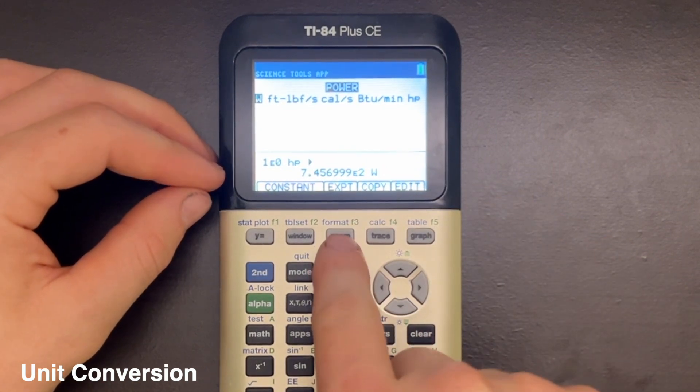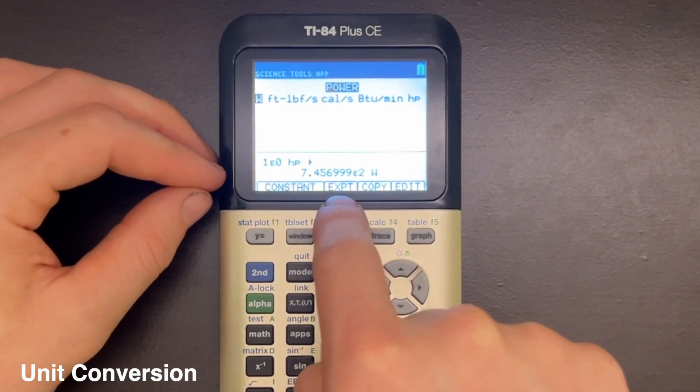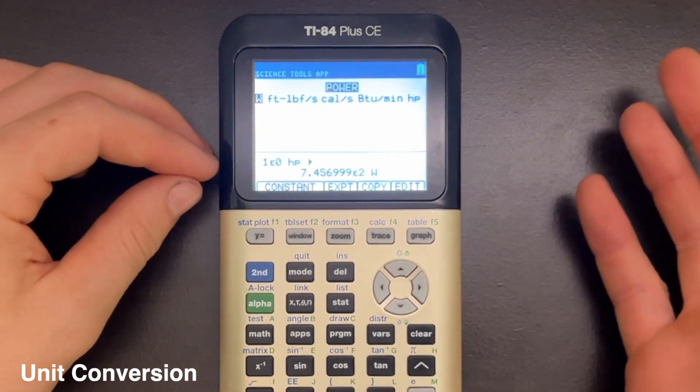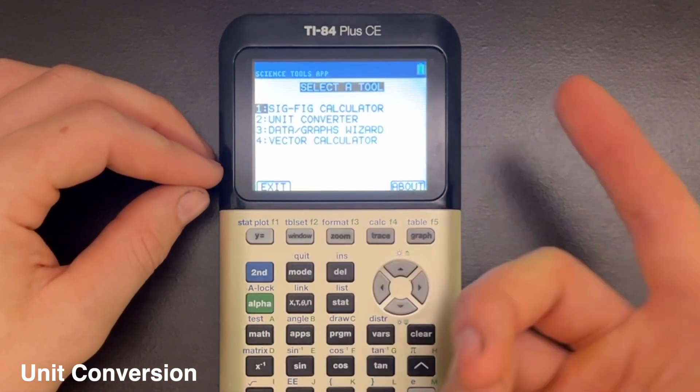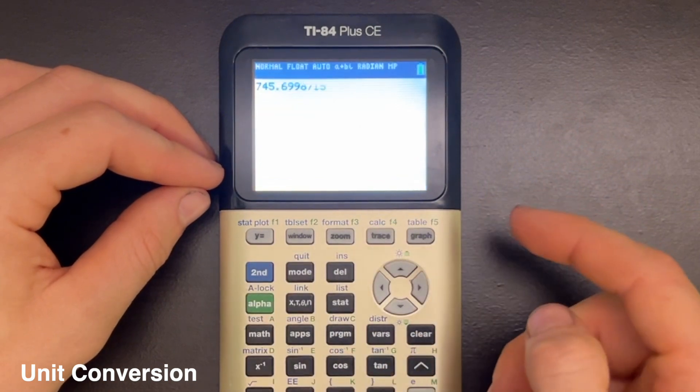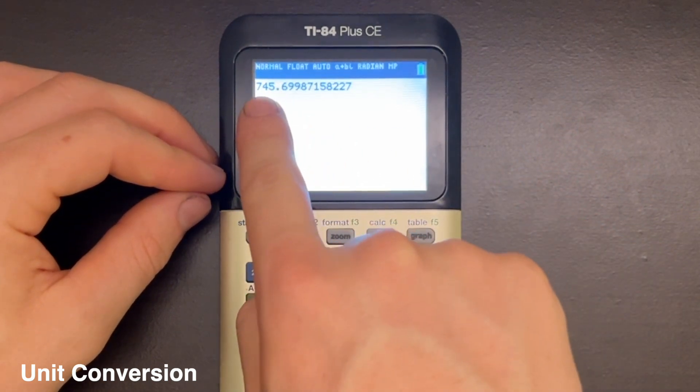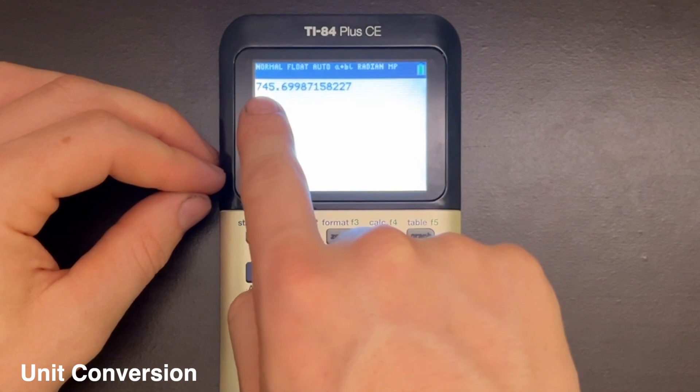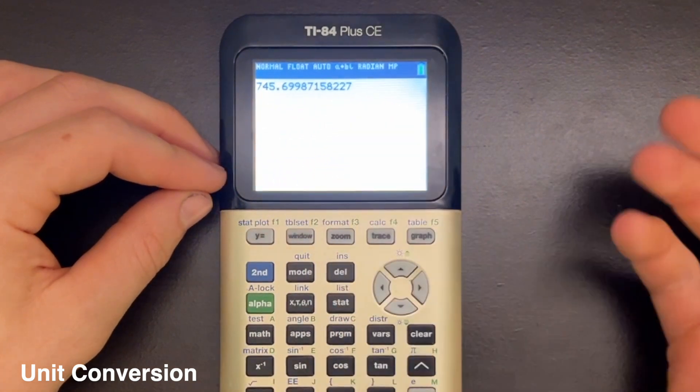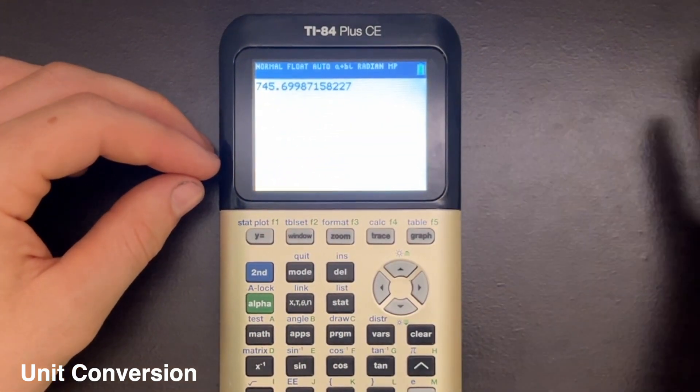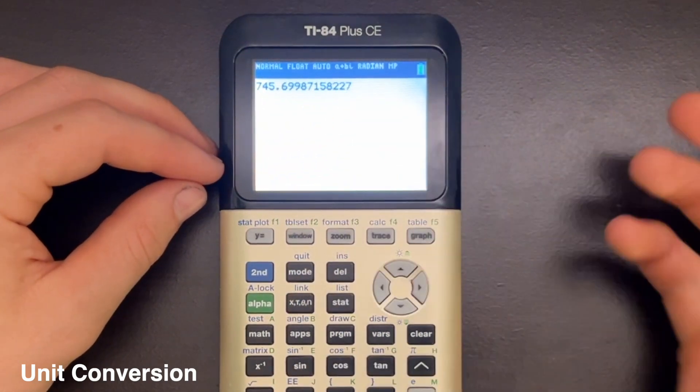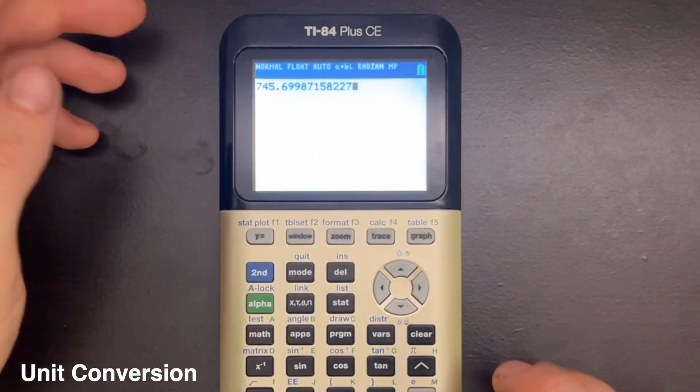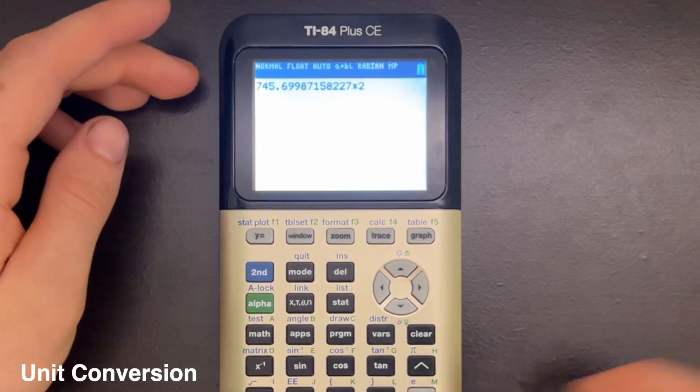And then if you press the Zoom key here, which corresponds to Export, it won't do anything immediately, but once you close out of the app by pressing 2nd quit several times, you can see it'll output your most recent conversion into the calculation screen. Without units, of course, this is just now a regular value, but from here you can do whatever you want to that number like you normally would.